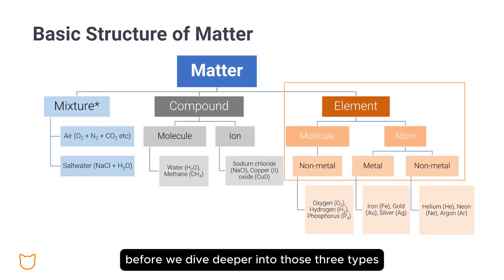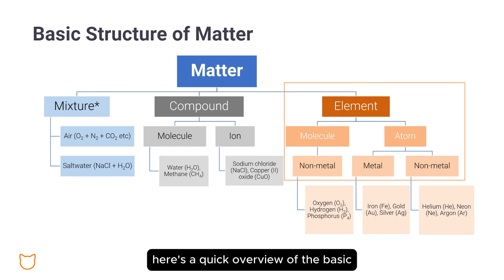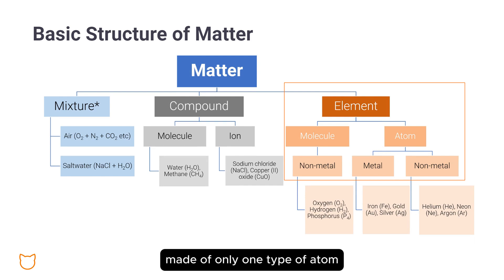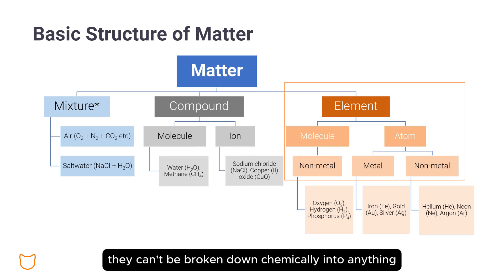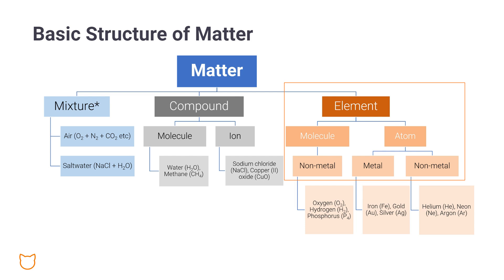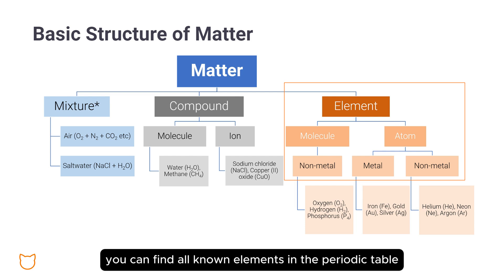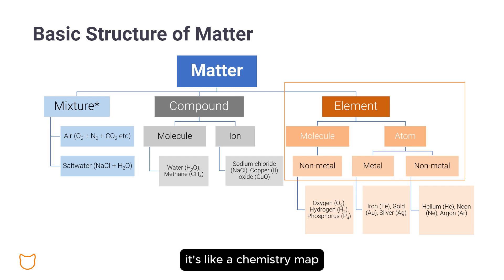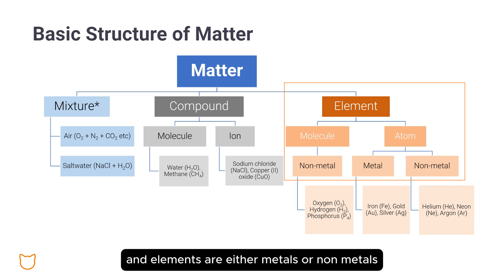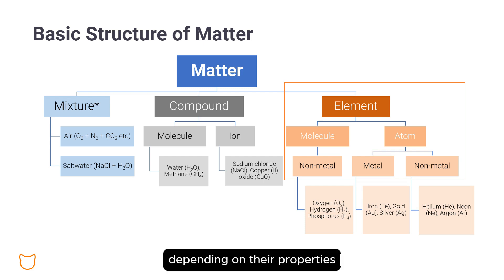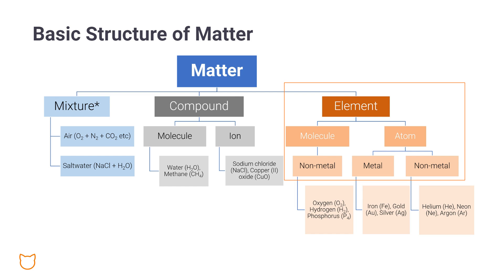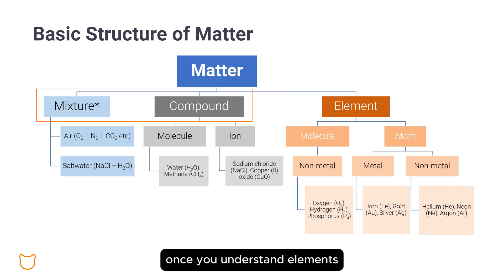Before we dive deeper into those three types, here's a quick overview of the basic structure of matter. Elements are the simplest substances, made of only one type of atom. They can't be broken down chemically into anything simpler. You can find all known elements in the periodic table — it's like a chemistry map. Elements are either metals or non-metals, depending on their properties. Simple, right? Once you understand elements, the rest falls into place.